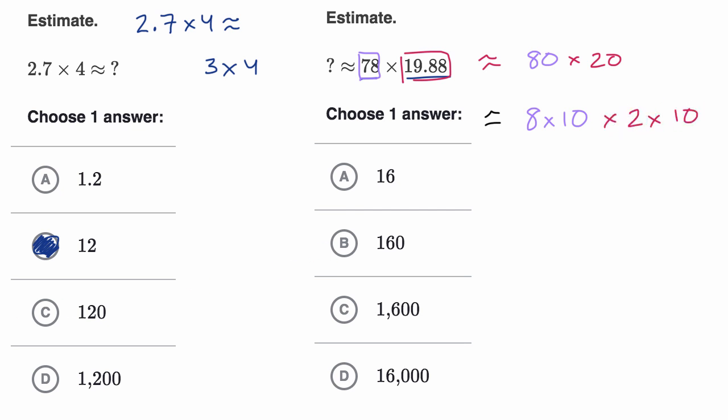Which we could then write as eight times two, which is 16. So 16 times 10 times 10 is times 100, which gives us 1600.